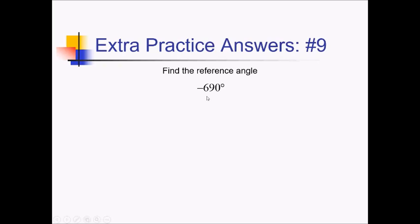To get a reference angle on this one, I first want to have a positive angle, so I'm going to keep adding 360 degrees until I get one. I'm going to have to add 360 twice, so that's 720 that I have to add here. That's going to give me 30. And 30 is already a reference angle because it's between 0 and 90.